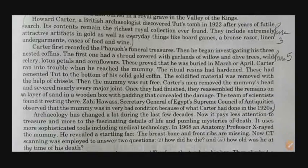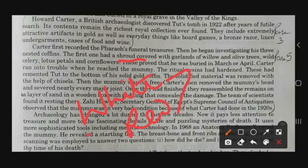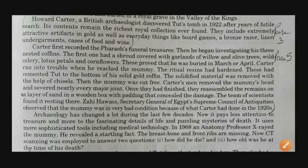Carter first recorded the Pharaoh's funeral treasures and then began investigating his three nested coffins. The first one had a shroud — a white cloth used to cover a dead body — covered with garlands of willow and olive trees, wild celery, lotus petals, and cornflowers. These proved that Tut was buried in March or April, as that is when lotus petals and cornflowers bloom. So they found out the time of death of Tutankhamen.